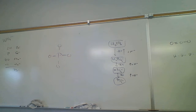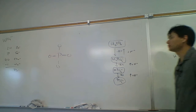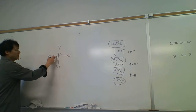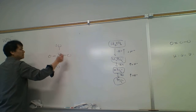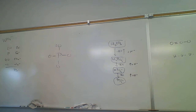Then we fill in the octets and figure out the formal charges. We draw phosphorus with four oxygens and then complete the octets, attaching the hydrogens to oxygens. It doesn't matter which two of the four oxygens we pick for the hydrogens.